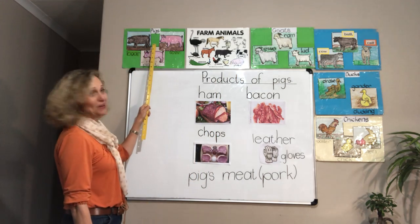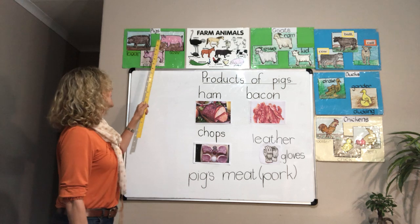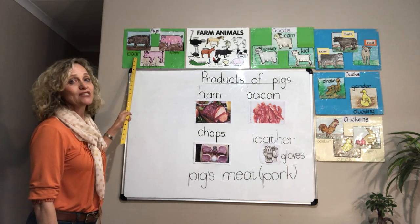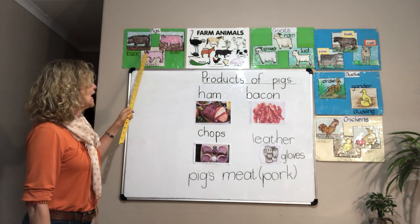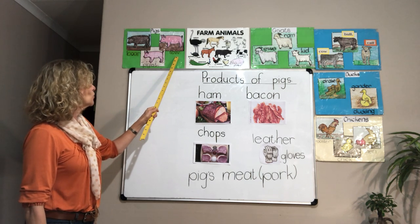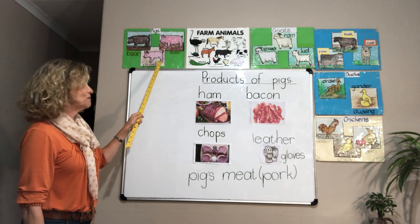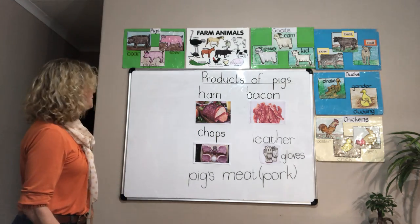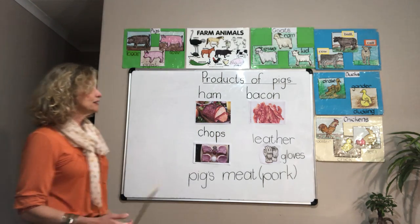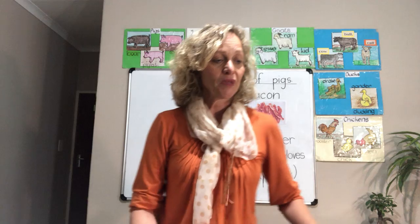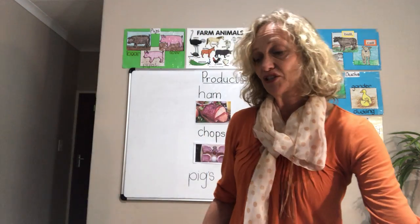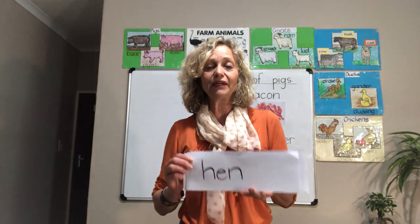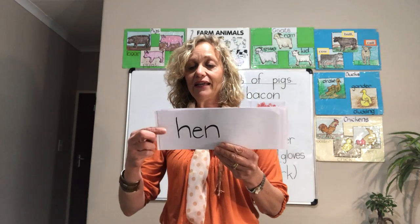Over here we have the pigs. The daddy pig is called a boar, the mummy pig is called a sow, and the baby pig is called a piglet. Now I just want you to look at the words of all these farm animals — we're going to read them together.